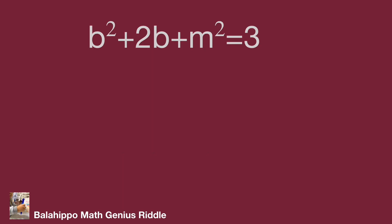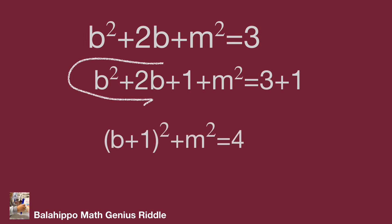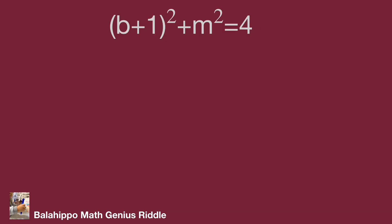Now we complete the square for the b terms. Adding 1 to both sides of the equation generates the quantity b plus 1 squared on the left side. So we get the quantity b plus 1 squared plus m squared equal to 4. Because b is an integer, we examine pairs of squared terms that sum to 4.